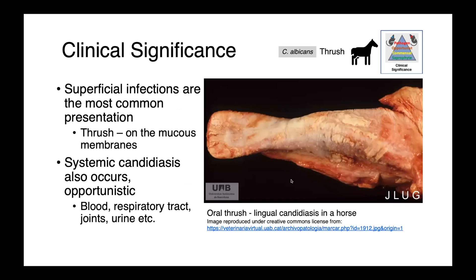We can see thrush in other species as well. In horses, we see superficial infections most commonly — thrush refers to Candida infections on the mucous membranes, and here you can see lingual candidiasis on a horse tongue with raised proliferative plaques. Systemic candidiasis can also occur as an opportunistic infection in immunosuppressed animals — horses, dogs, or any other species — where the organism can be found in the blood, respiratory tract, joints, and urine.